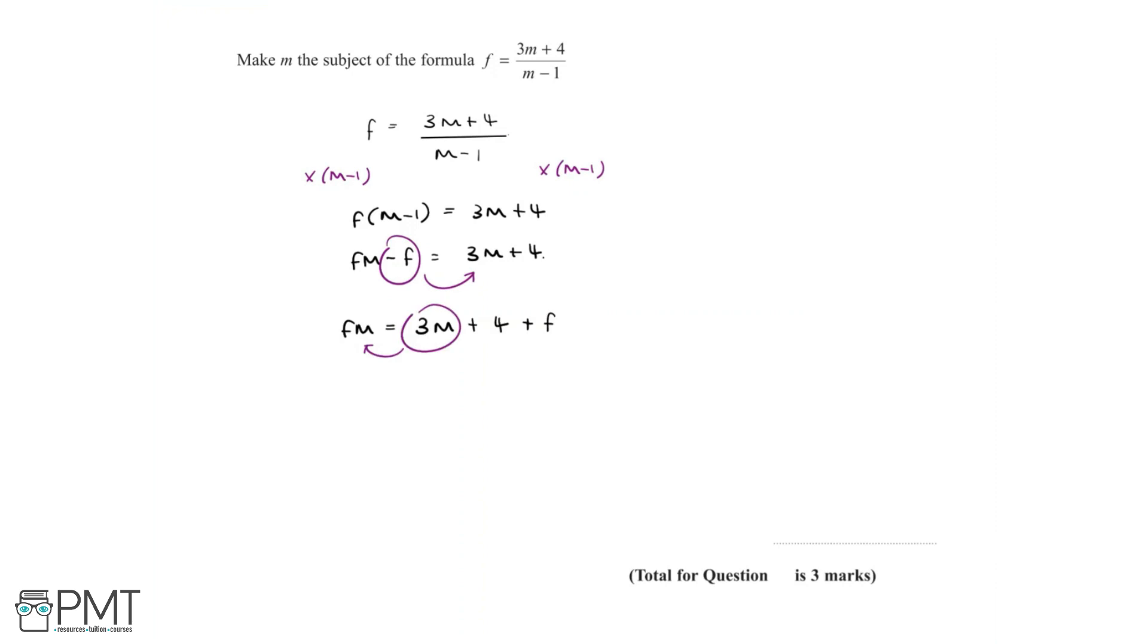Now since we want to make m the subject, we want to isolate the m's on one side, and so 3m can be moved to the other side, which leaves us with fm minus 3m is equal to 4 plus f.